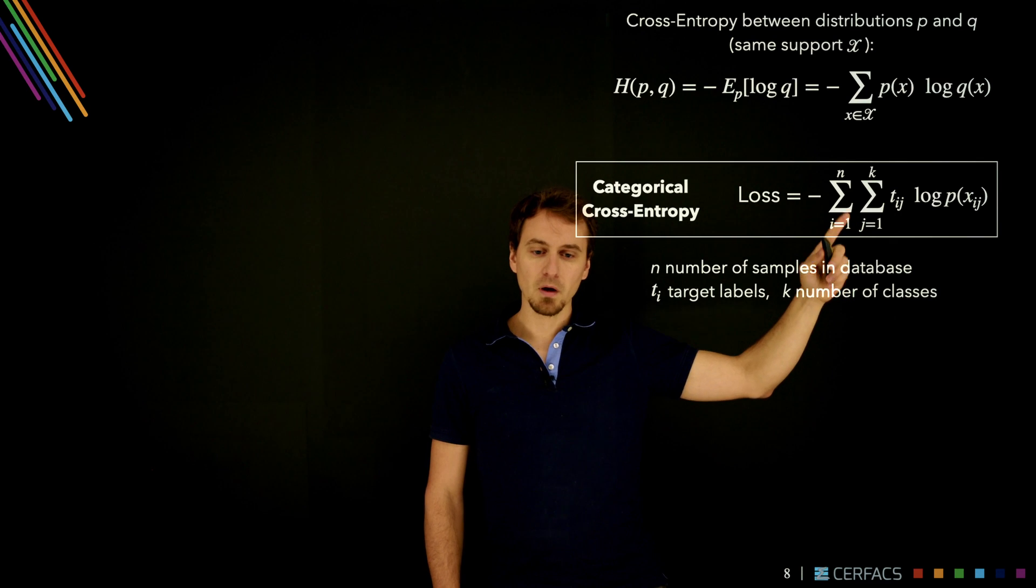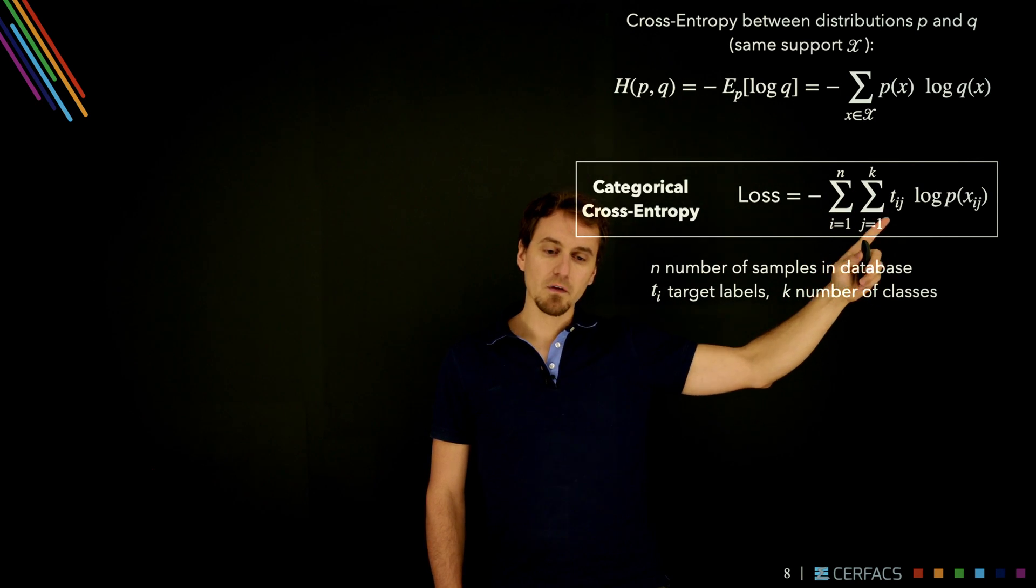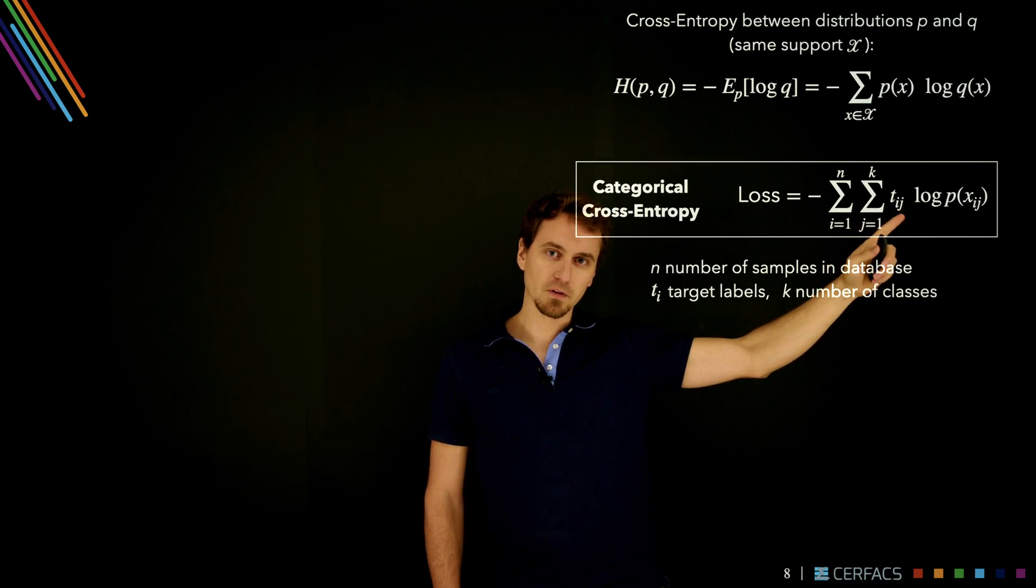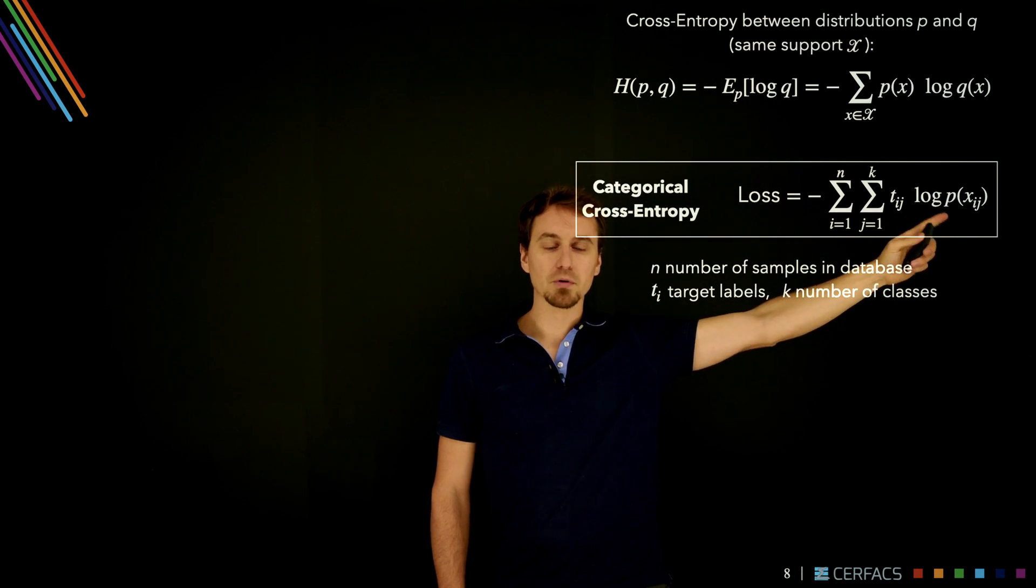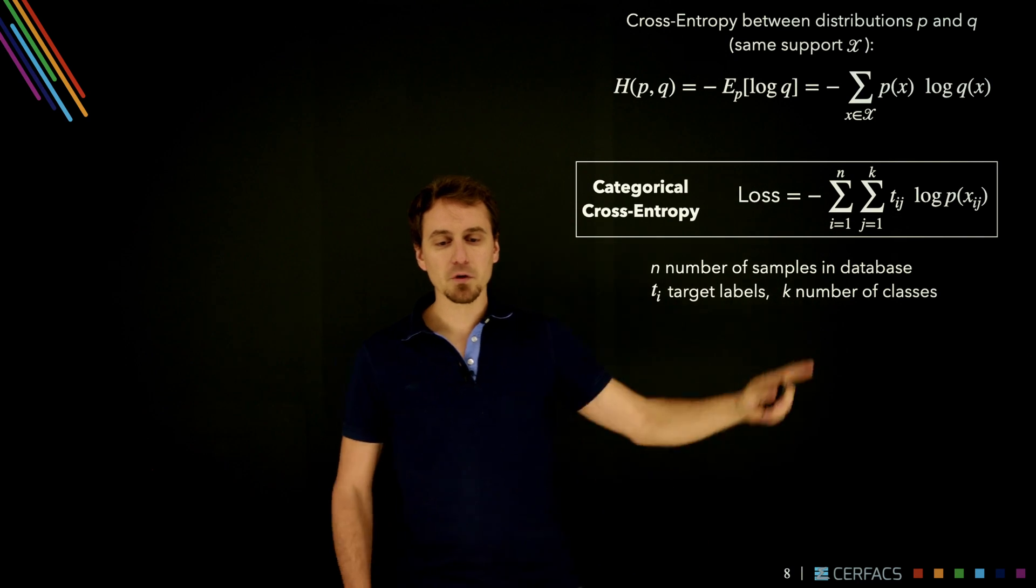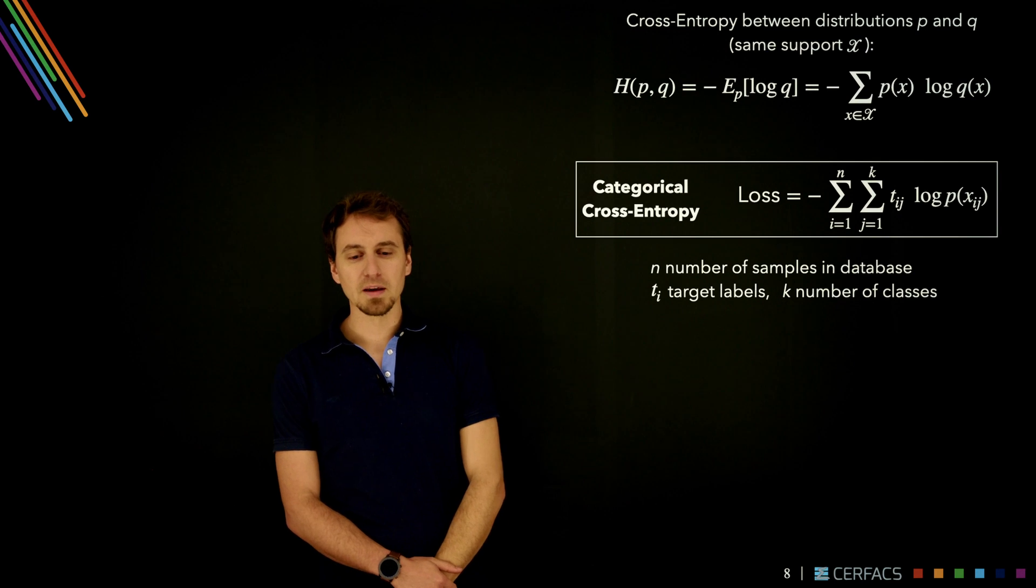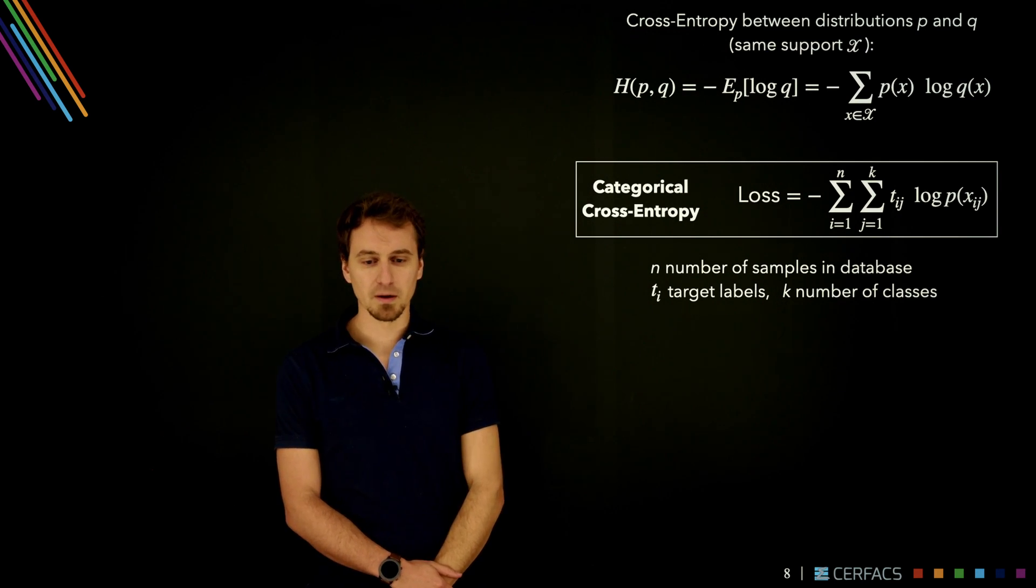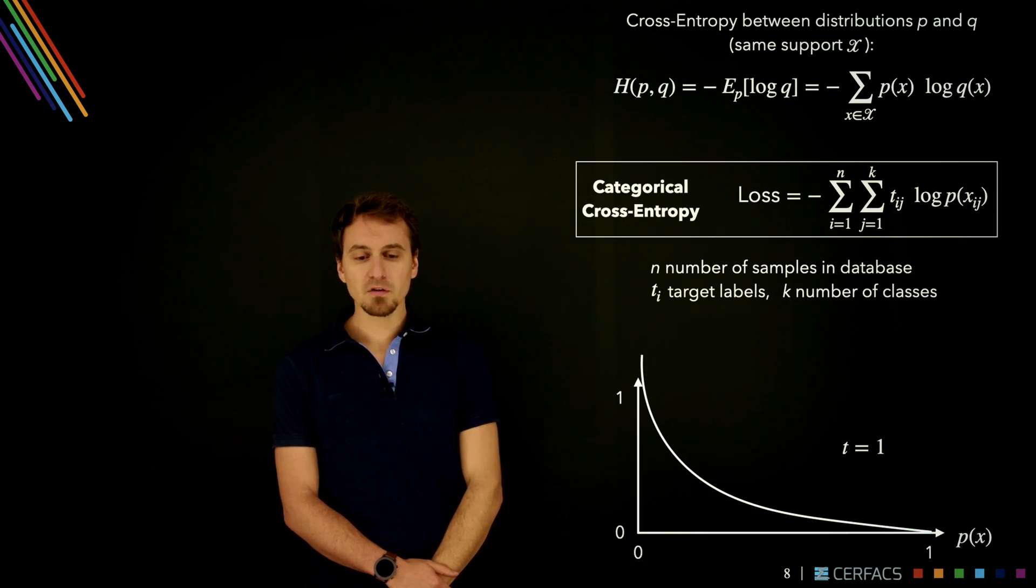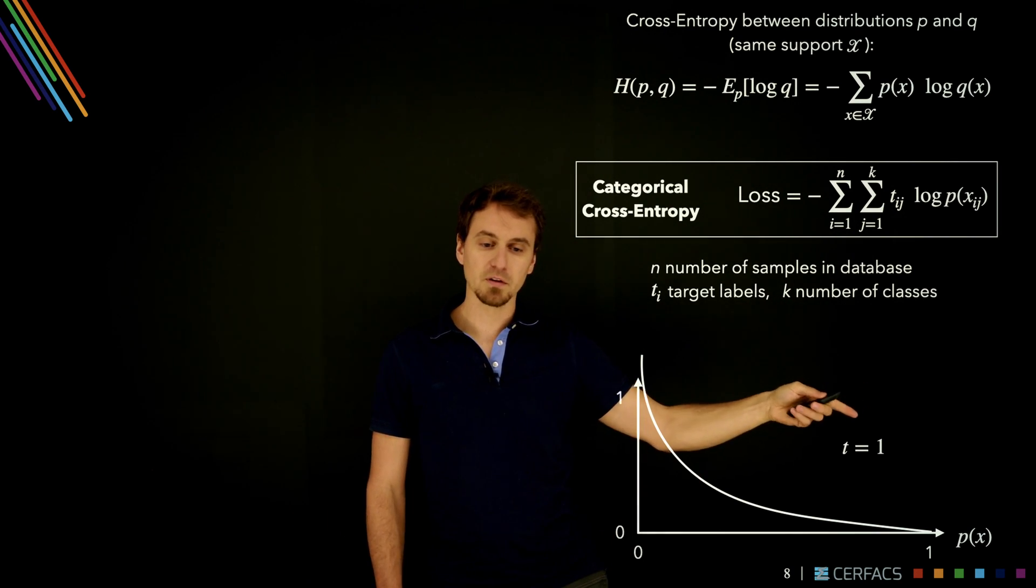The way we build a loss function from that is called categorical cross-entropy. So we build a loss which is also a sum on all the possible samples in your database, but also a sum on all the possible classes of the t_ij. So these are the target values, the labels that you're going to use to train, times the predictions that are given for each of these samples by your model. Notice that there's a minus sign in front and this is important. This is what's going to enable the minimization algorithm to work correctly.